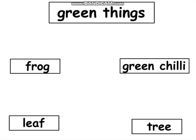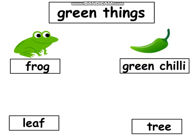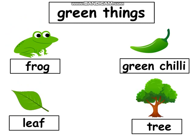In this slide you will see different things of green color. What is this? Come on, tell me — frog! And what is this? You are absolutely correct — green chili! Leaf. Tree. Now tell me, what color are all of these things? You are absolutely correct — green color! Green color things.